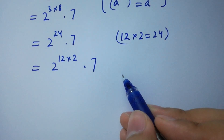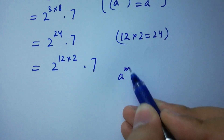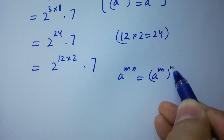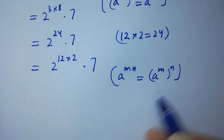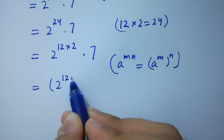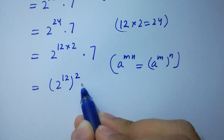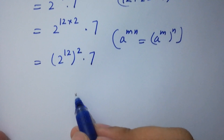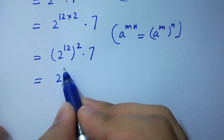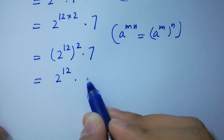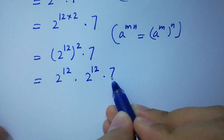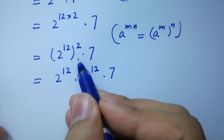Using the rule a to the power m times n equals a to the power m to the whole power n, we can write 2 to the power 24 times 7 as 2 to the power 12, times 2 to the power 12, times 7, because 12 times 2 is 24.